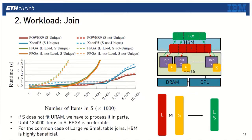This of course increases the runtimes linearly. We observe that for some configurations, especially if S is unique, the FPGA maintains its performance advantage over the CPU until 125,000 items in S. In conclusion, for the common case of large versus small table join, HBM and the FPGA are highly beneficial and can be considered as an alternative for the CPU. However, it cannot be used as a high-performance generic join implementation for all cases.